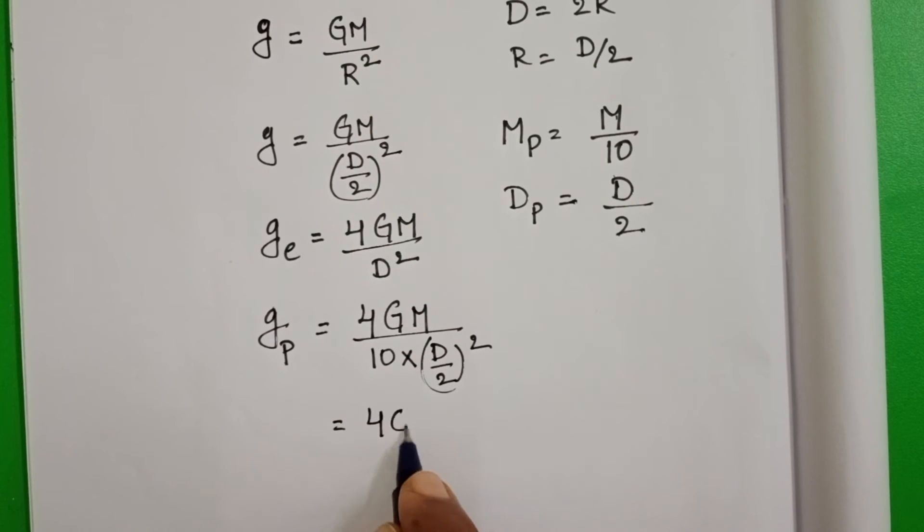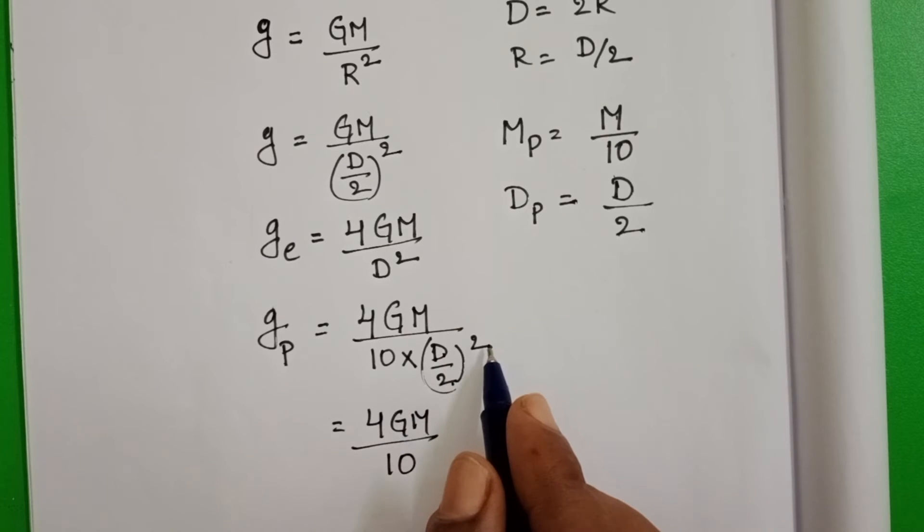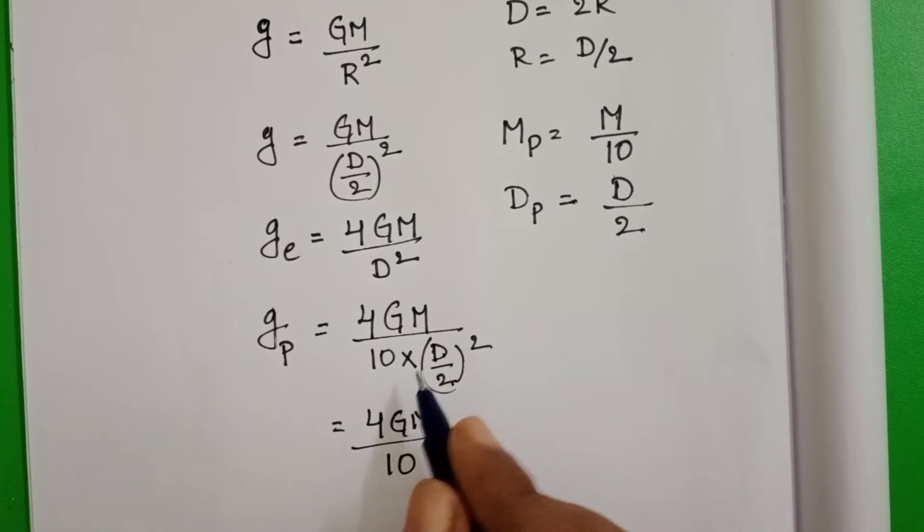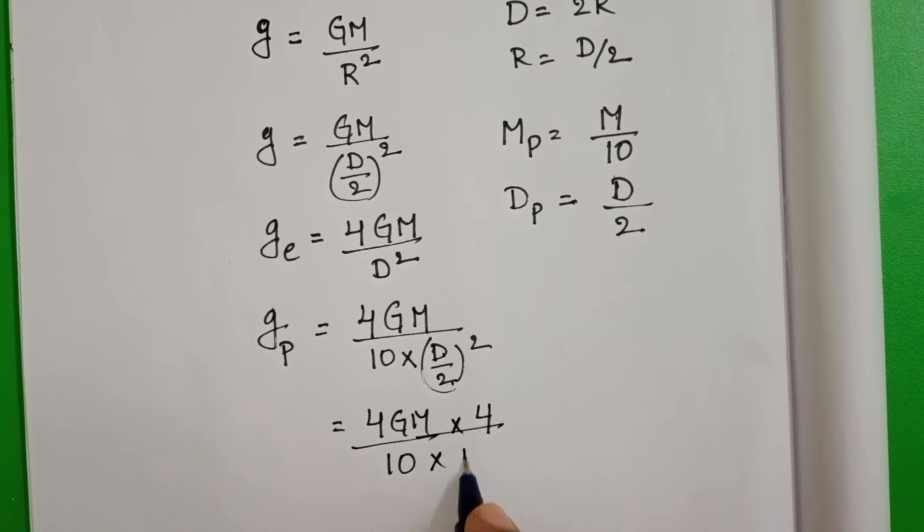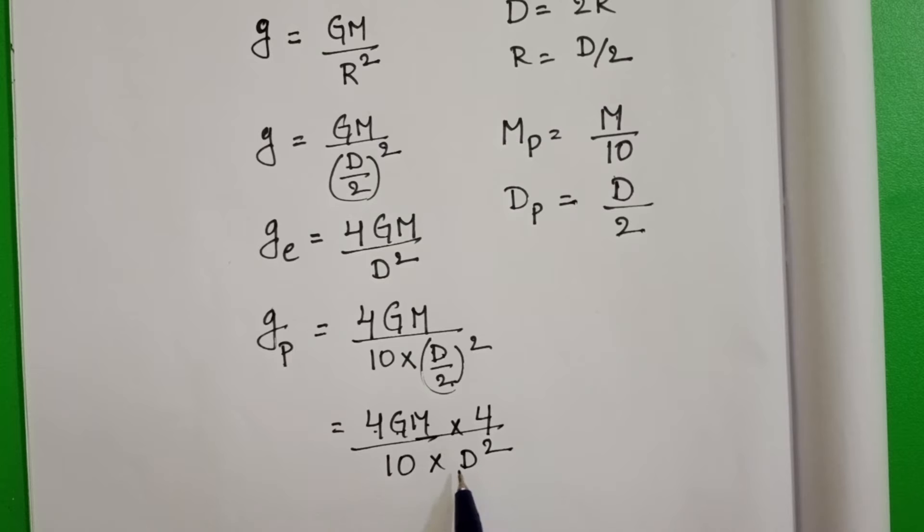Then 4GM by 10. This D by 2 whole square becomes to D squared by 4 and 4 goes to numerator. 4 by D square. Now 4GM by D square.